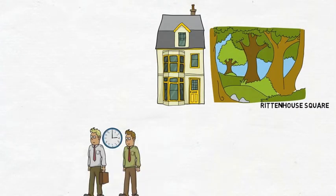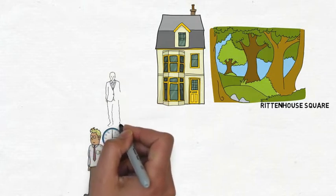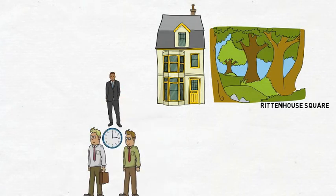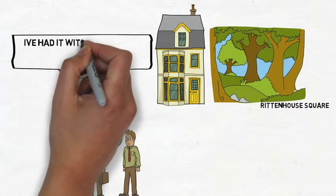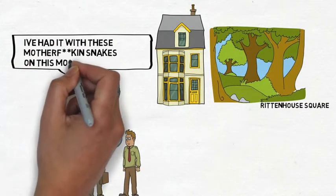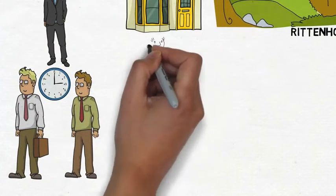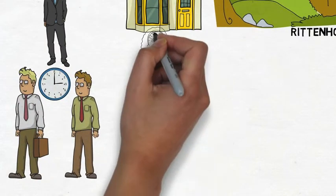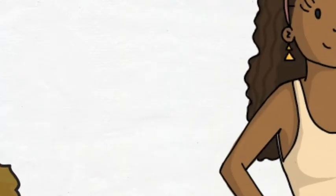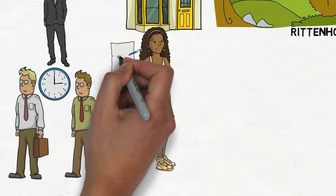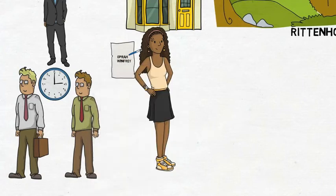So we waited one morning and Samuel L. popped out and he gave us a little lecture in his famous voice, but signed a couple items for my buddy and myself. And then Oprah came out in a jogging suit. I guess she was going to make a few laps around Rittenhouse Square. She signed a cover of her magazine.